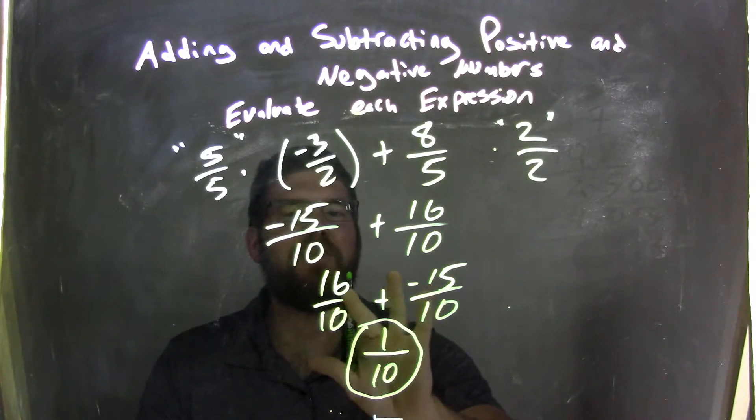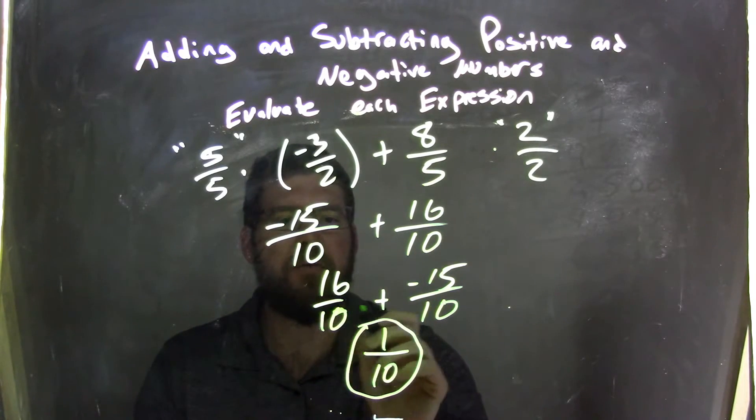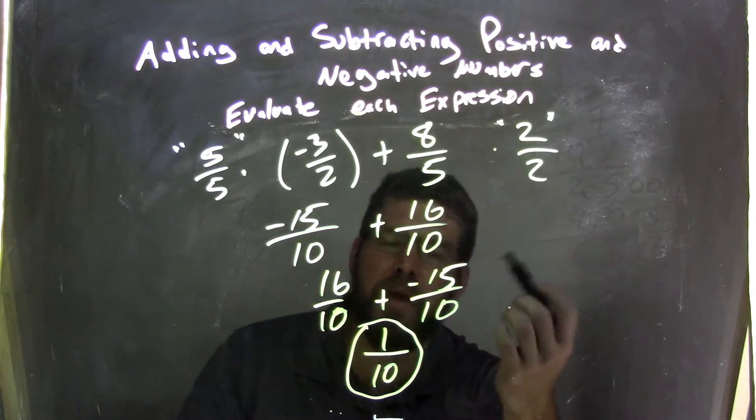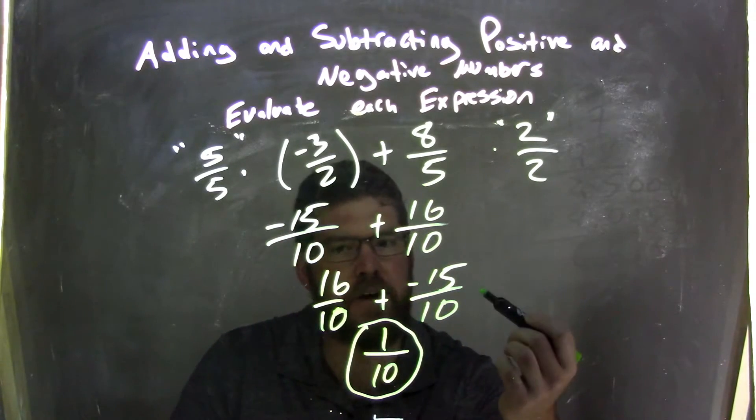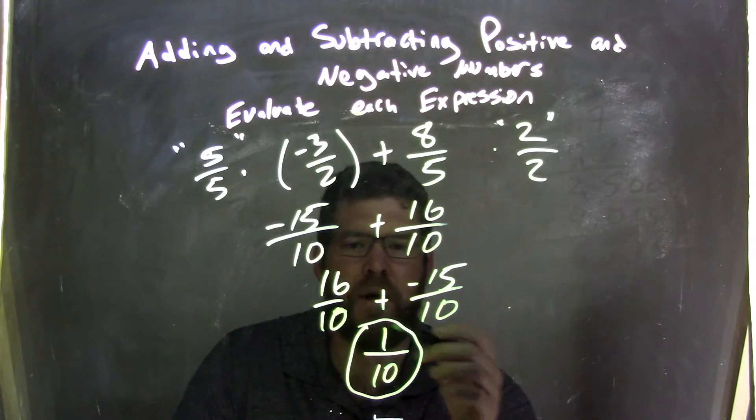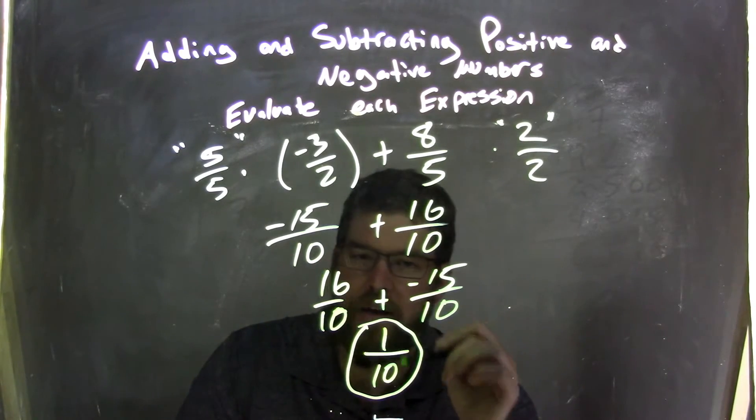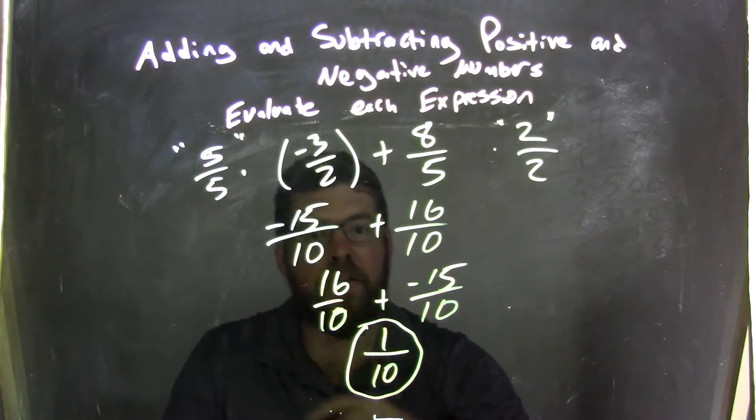Commutative property says we can rearrange that, sixteen over ten, right here, plus negative fifteen over ten. Now we know adding a negative is the same thing as subtraction, so sixteen minus fifteen is one, and we keep the denominator the same, make sure you keep that, and we have one-tenth as our final answer.